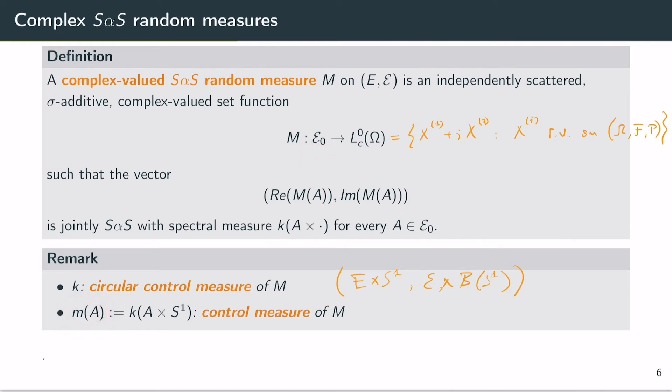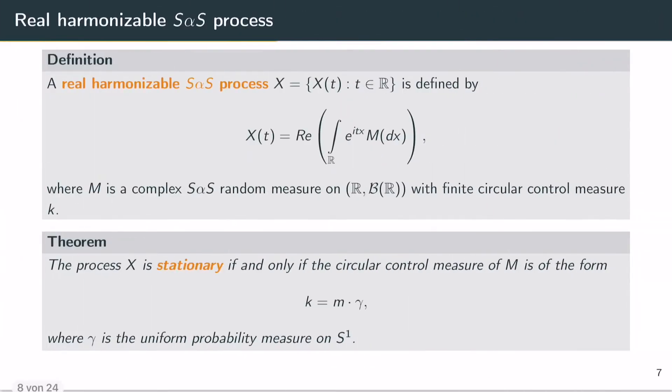One can define stochastic integrals with respect to these random measures. Our stochastic process can be defined by these stochastic integrals in the form given here. We say that the process X is a real harmonizable symmetric alpha stable process if it has this representation, where M is a complex symmetric alpha stable random measure on the real line with finite circular control measure k.